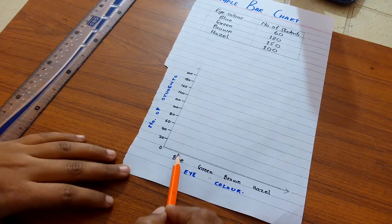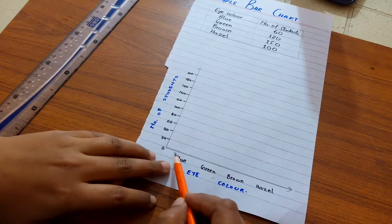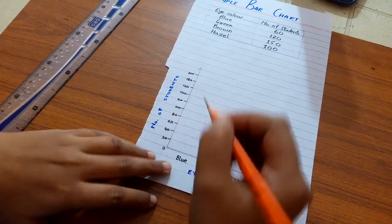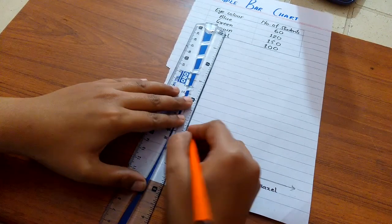Now I am going to construct a bar for students having blue eyes. The total number of students are 60, so I mark here and simply draw a line here, and it looks like a bar.